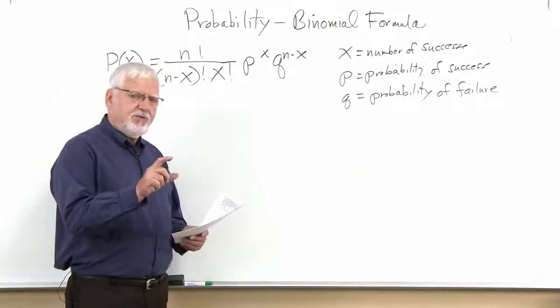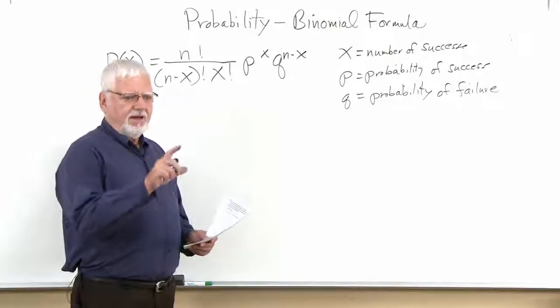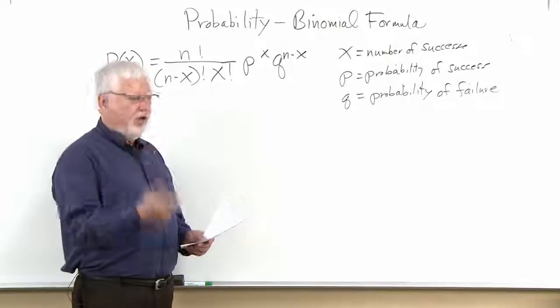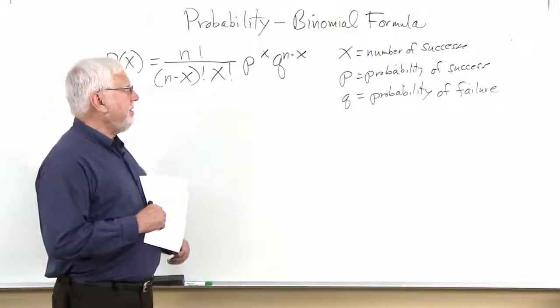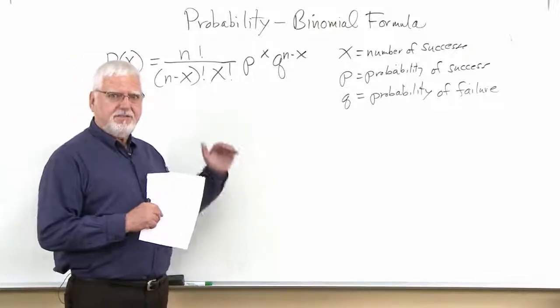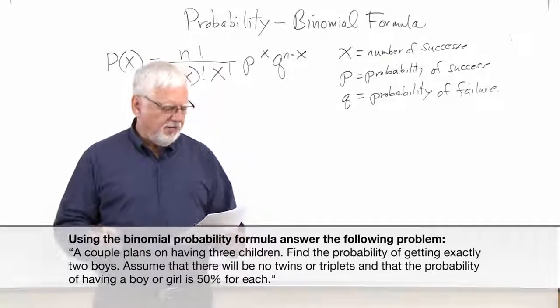The binomial review has just two choices: yes or no, this outcome or that outcome. Throwing a coin would be an example. We're going to revisit a problem we've already done to see if this gets the same thing. So the problem we're going to deal with is one we dealt with already.